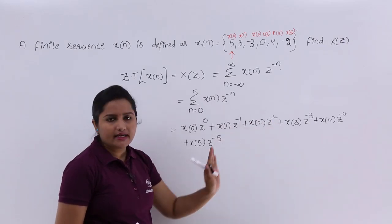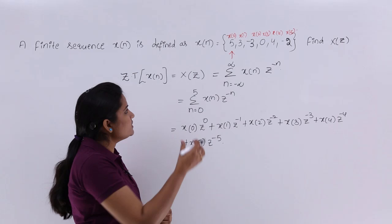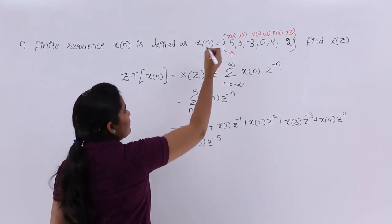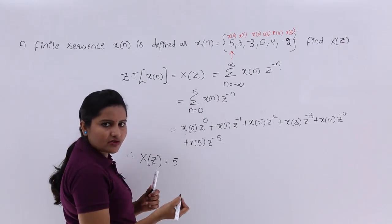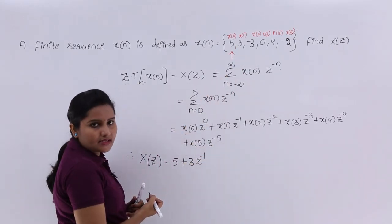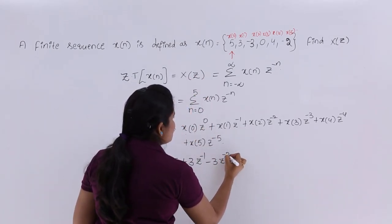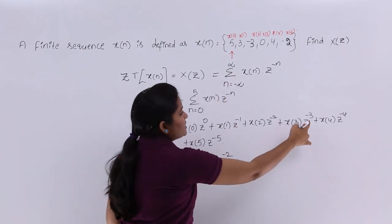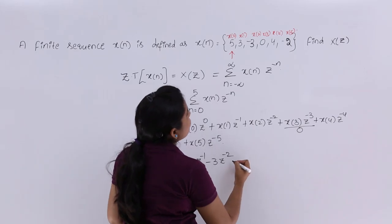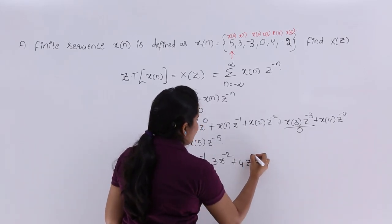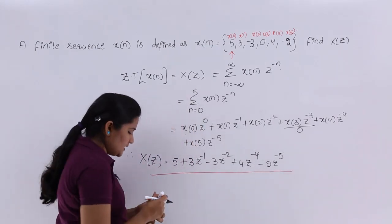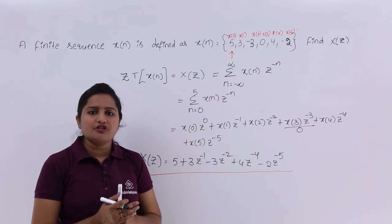Substituting the known values x of 0 = 5, x of 1 = 3, x of 2 = -3, x of 3 = 0, x of 4 = 4, x of 5 = -2: X of z equals 5 plus 3z to the power minus 1 minus 3z to the power minus 2 plus 0 (omitted) plus 4z to the power minus 4 minus 2z to the power minus 5. This is the Z transform of the given finite duration sequence.